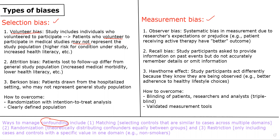Another well-known example is attrition bias. This is when patients' loss to follow-up differs from the general study population in a significant way, such as people with increased medical morbidity who have trouble making it to clinic visits, or people with lower health literacy who are less likely to adhere to study protocols. This highlights that selection bias can occur both on the front end in recruiting participants and on the back end through differential losses to follow-up.